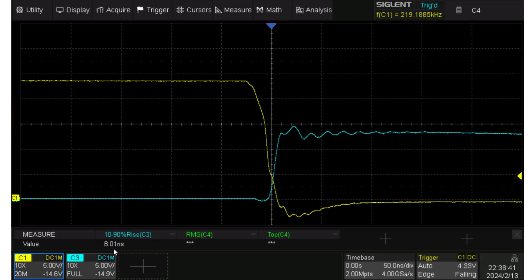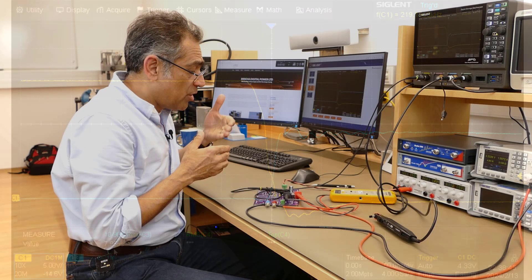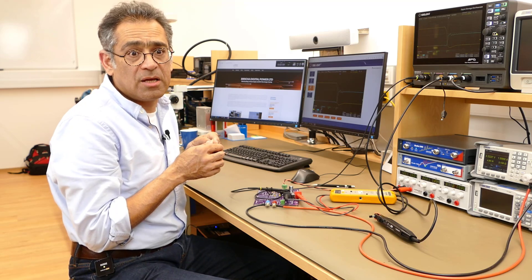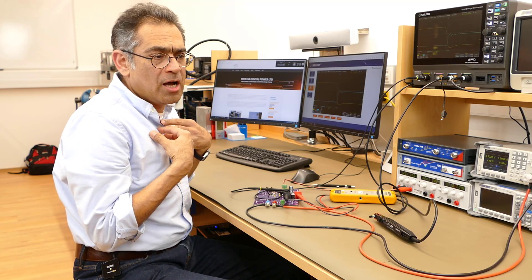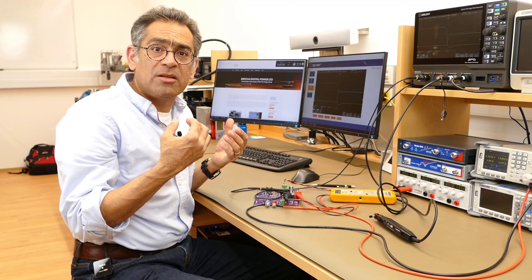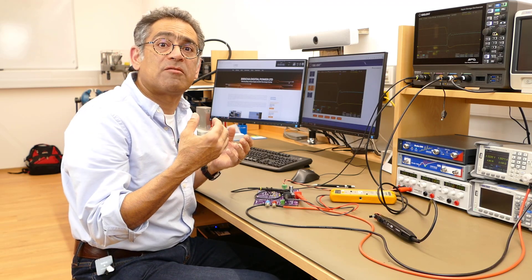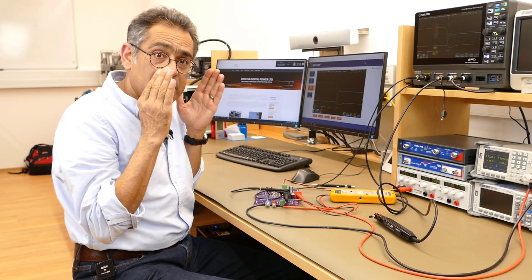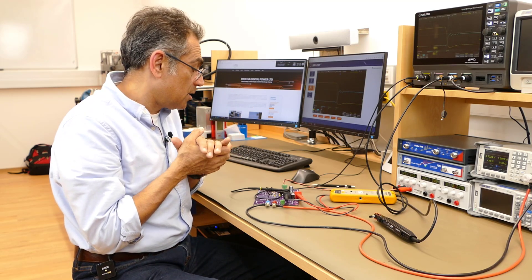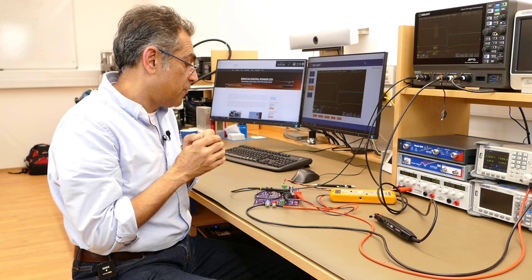So you can clearly see that we can control now the on period and the off period with the correct selection of the resistance. I personally don't like ringing so I try to choose the value so that I minimize the amount of ringing but there may be many other criteria that you can choose in order to select the correct off time, the turn off time for your MOSFET.